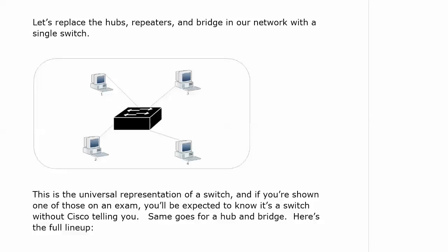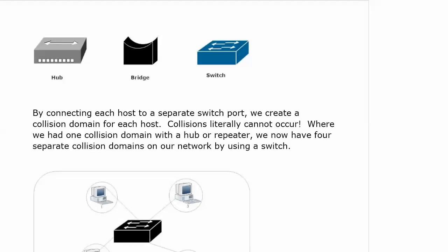The switch behaviors we talk about — they could show you a diagram like this and just say, what happens if X, and they're not going to tell you it's a switch. They expect you to know that. Here's the full rogues gallery: here's your hub with your single double-headed arrow on top, there's your bridge, and there's your switch.